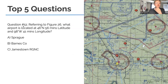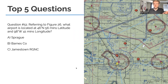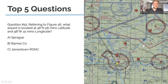Question 51, referring to Figure 26: What airport is located at 46 degrees 56 minutes north latitude and 98 degrees 41 minutes west longitude? Go ahead and try to answer. The map is blown up on screen. Use your testing supplement if you have it — it's what you'll have on the actual FAA exam.